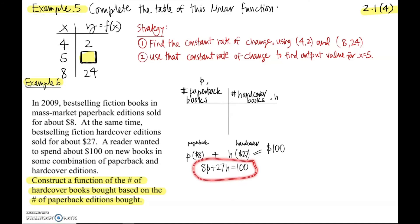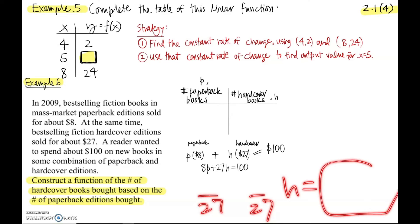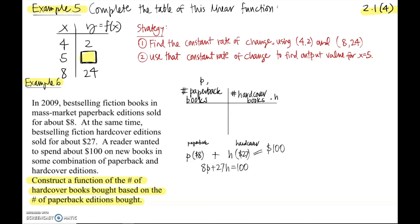I can clean this up a bit. Since they want H as the output, I could solve for H: subtract 8P from both sides and divide everything by 27, giving H = (100 − 8P) / 27. This is a good start — it's problem 18 on your 2.1 homework, and this should give you a footing to think through the problem and answer the further questions they ask.